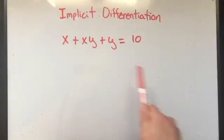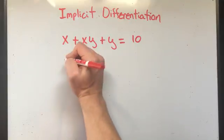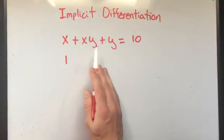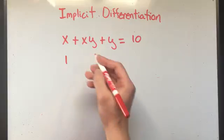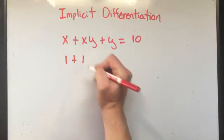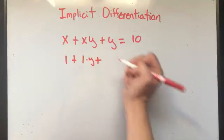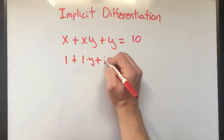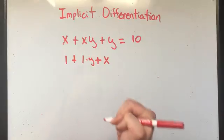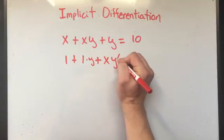So let's take the derivative of both sides. Now the derivative of x is 1 — we all know that. x times y is a product rule, so I'll take the derivative of x, that's 1, times the second. Product rule says plus — I copy the first function and then I multiply by the derivative of the second. Now the derivative of y is y prime.